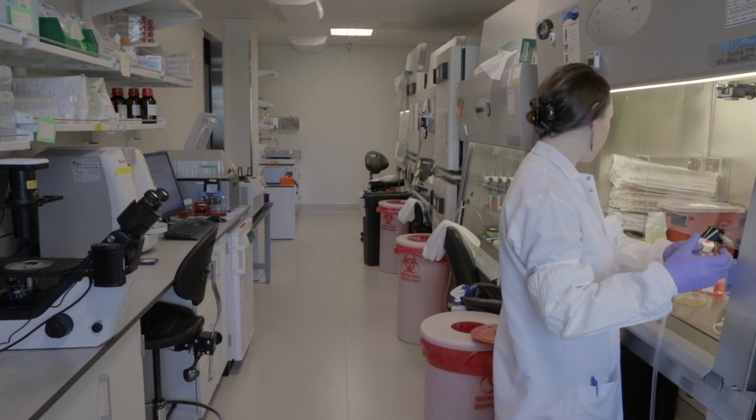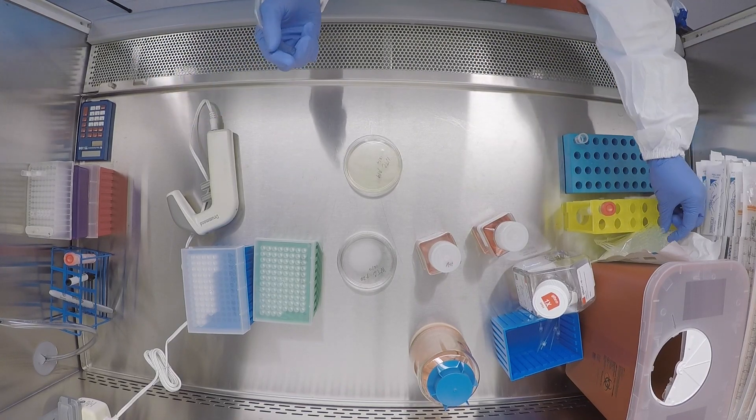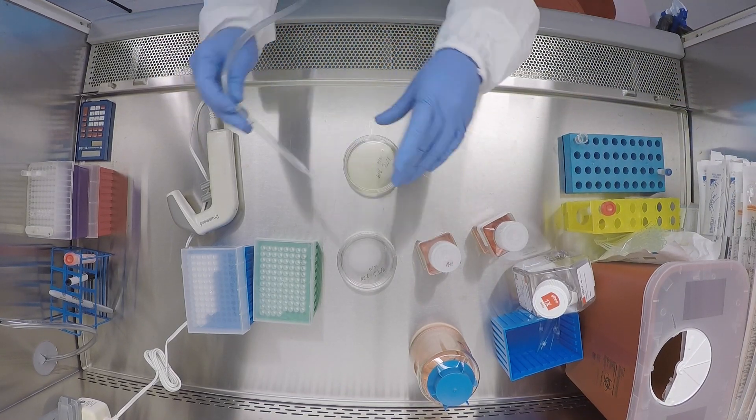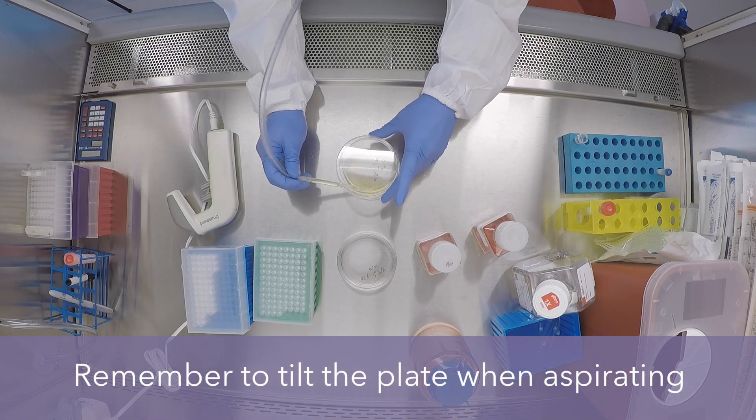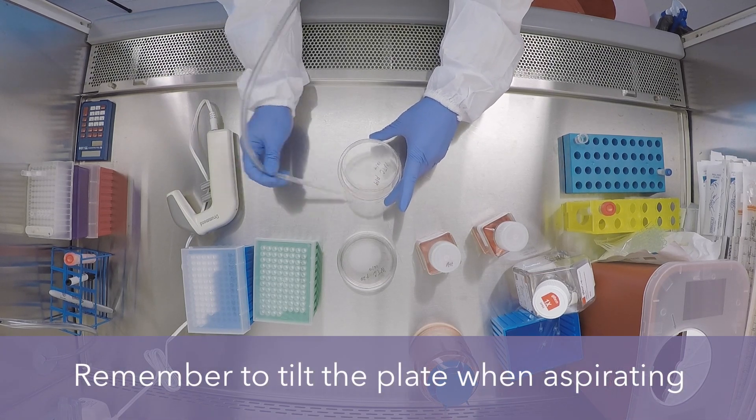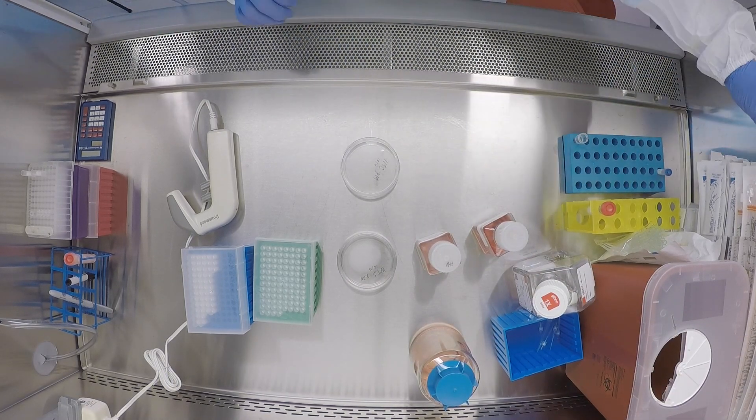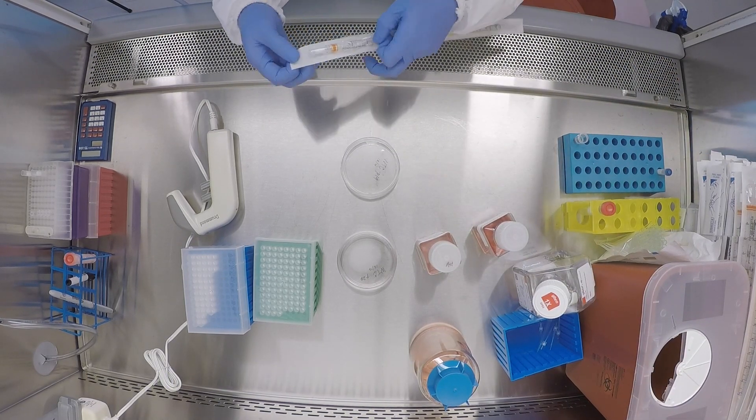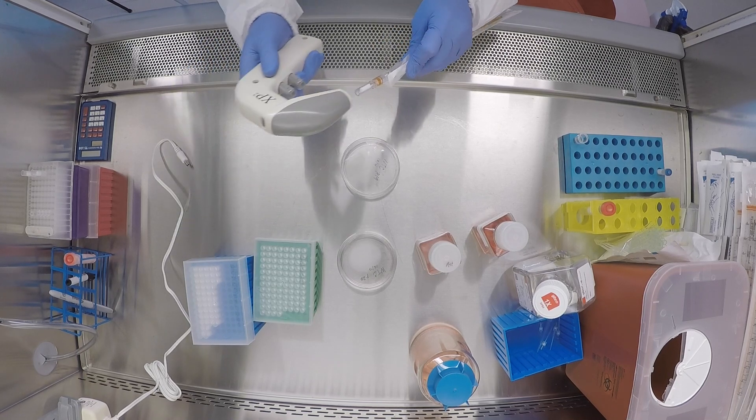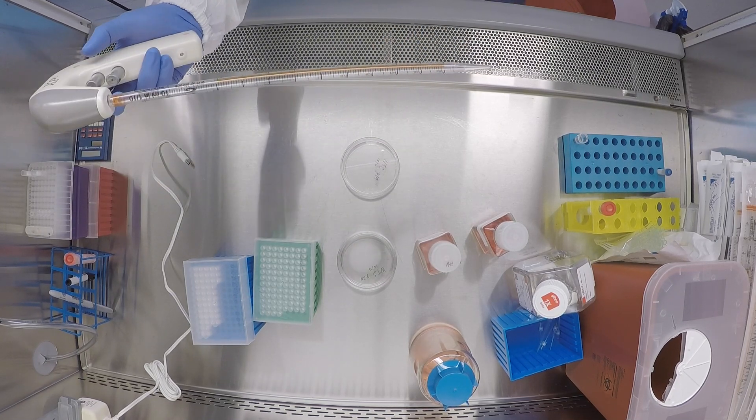Okay, the first step is that we're going to take the media off and do a PBS rinse. So I'm going to rinse these with 10 mils of PBS, and I'm just going to be careful to not put it directly on the cells.